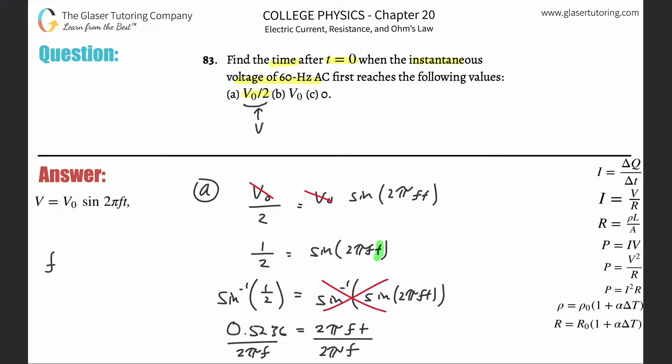So the time here is going to be simply 0.5236 all divided by 2 pi multiplied by 60 Hertz. So 2 times pi multiplied by 60, that's all in the bottom. So this works out to be about 1.39 times 10 to the minus 3 seconds. You want that in milliseconds? Just divide it by a thousand.